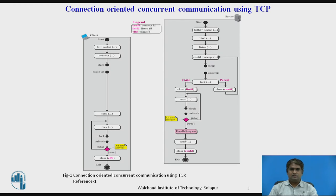The server program then calls the accept function. This function is a blocking function. When it is called, it is blocked until the TCP receives a connection request from a client. A connection request is a SYN segment, i.e., a Synchronization segment. The accept function is then unblocked and creates a socket called the connect socket, which includes the socket address of the client that sent the SYN segment.